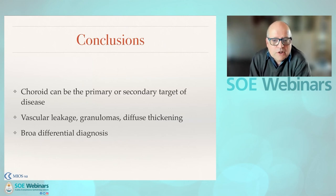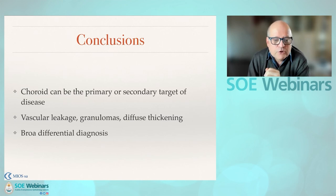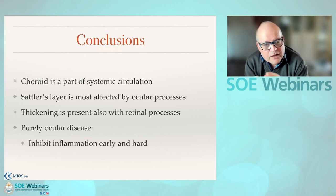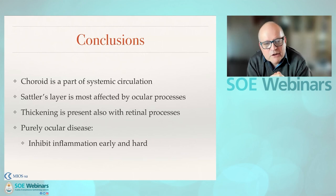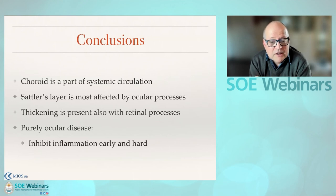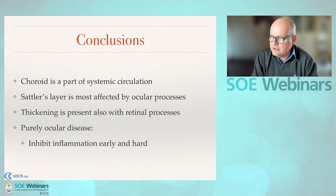In conclusion, the choroid can be the primary or secondary target of disease. Vascular leakage, granuloma formation, and thickening of the choroid are the things to look for. Consider a broad differential diagnosis because the choroid is part of the systemic circulation. Sattler's layer is most affected by these inflammatory processes. Purely ocular diseases such as VKH and sympathetic ophthalmia require strong inhibition early and for a sufficient amount of time. Thank you very much.